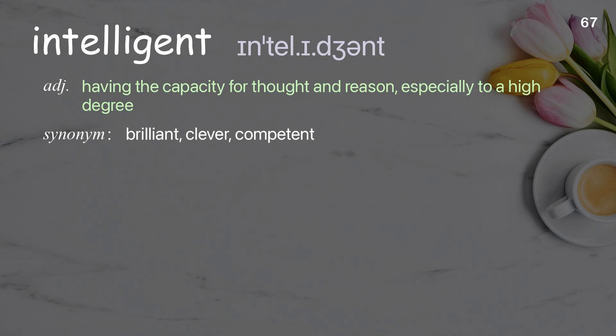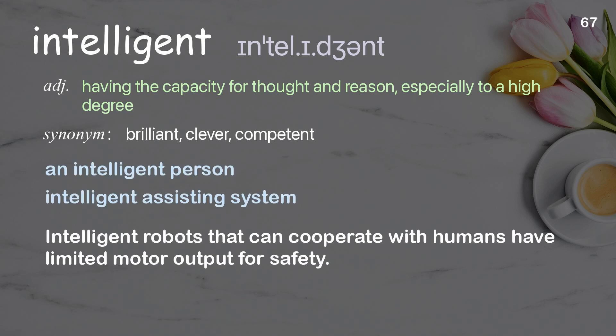Intelligent: Having the capacity for thought and reason, especially to a high degree. Examples: An intelligent person. Intelligent assisting system. Intelligent robots that can cooperate with humans have limited motor output for safety.